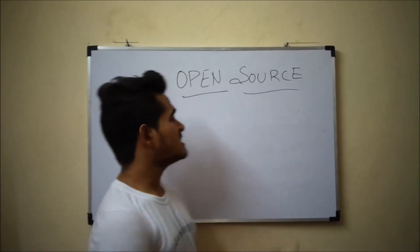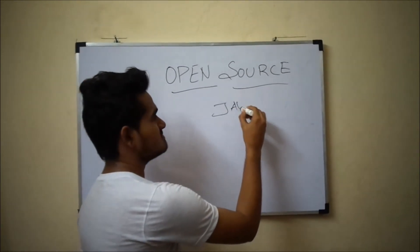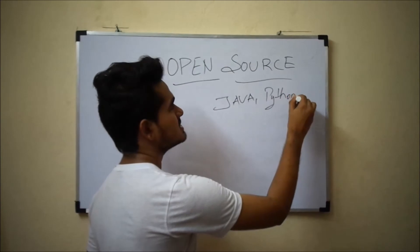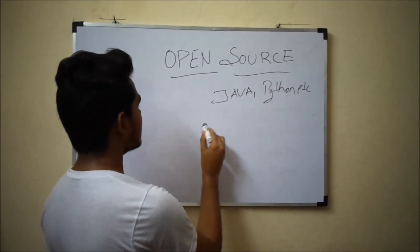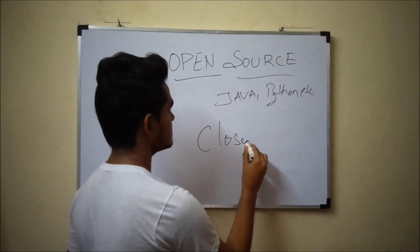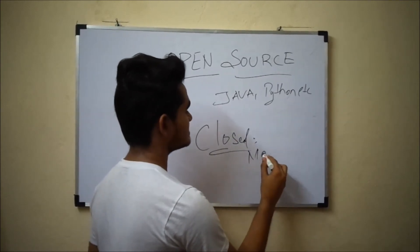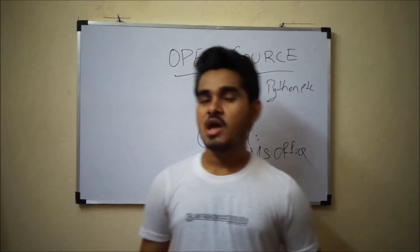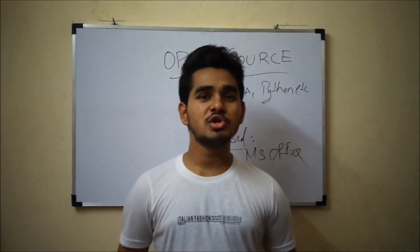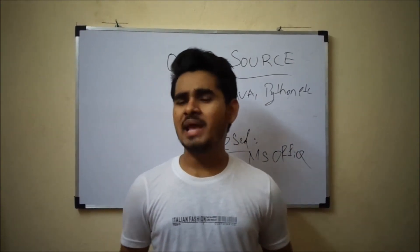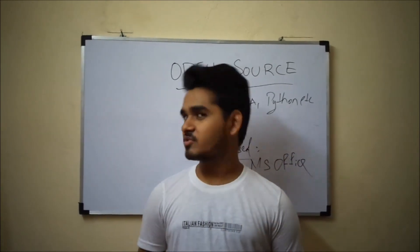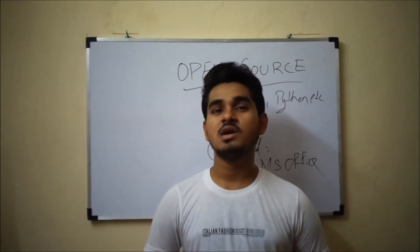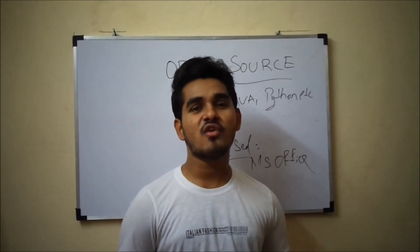For example, open source software includes Java and Python, among many others. Coming to closed source, a good example is MS Office. We all know how to use MS Office, but we cannot get the MS Office source code anywhere. If you don't believe me, try to search the internet — you won't find it. This is what closed source software is.